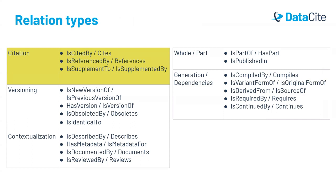For the sake of easy understanding, we've put the relation types into five conceptual categories. The citation category includes: cites, is cited by, references, is referenced by, is supplemented to, and is supplemented by. These are arguably the three most important pairs of relations, which we'll come back to shortly. First, let's go through the rest of the relations.